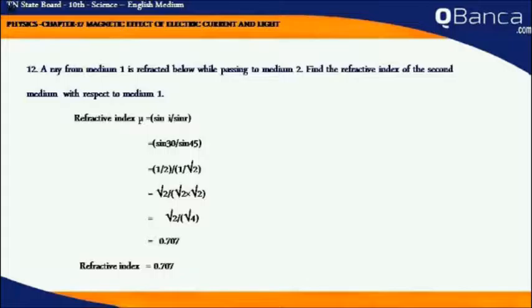i equals 30 degrees, r equals 45 degrees. Therefore, refractive index mu equals sin 30 by sin 45, where sin 30 equals 1 by 2 and sin 45 equals 1 by root 2.